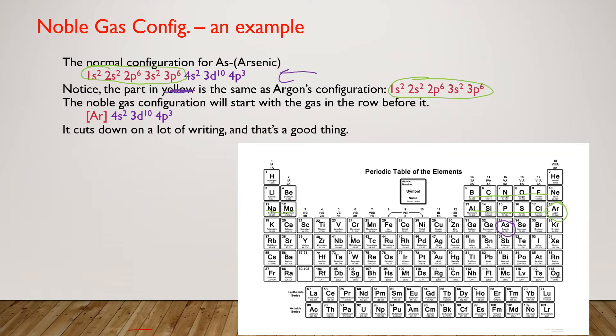So what we can do is replace that part with Ar in brackets. That's an R, not an S. So the noble gas configuration for arsenic would be argon 4s2, 3d10, and then 4p3.